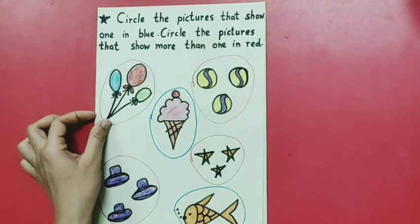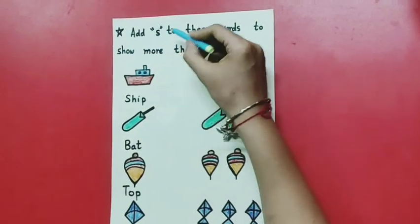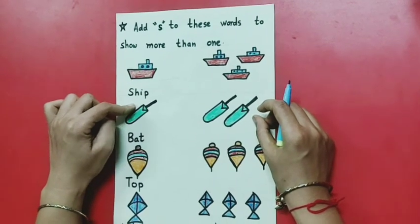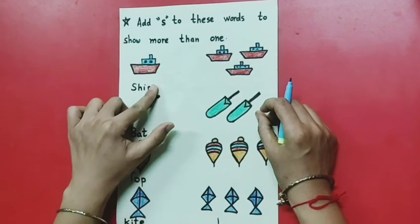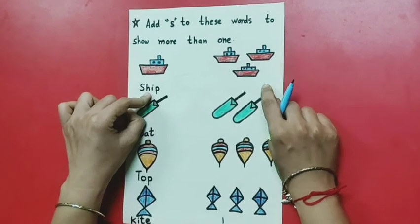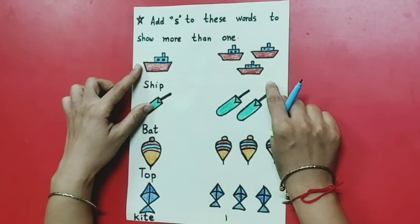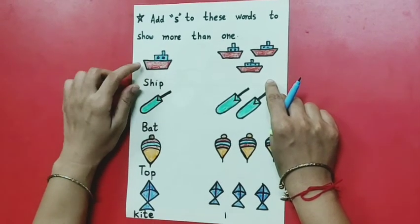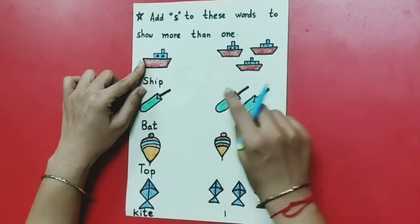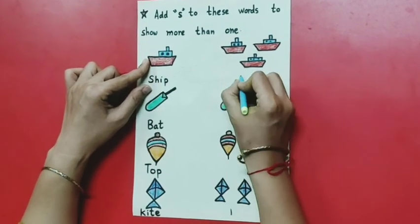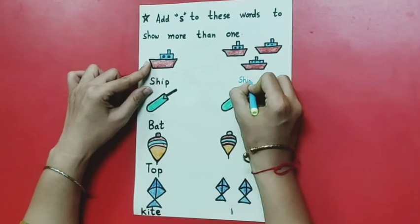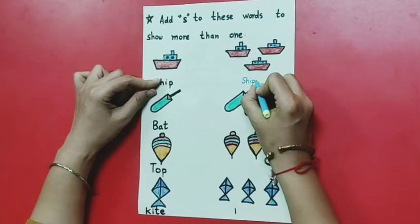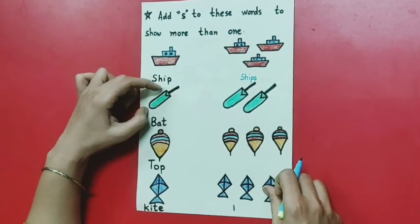So now we have completed this activity. Moving to our next activity — add 'S' to these words to show more than one. Ma'am has drawn pictures and written spellings. We have to add 'S' at the end of the spelling so it becomes many — from singular to plural. Now look here — this is a picture of a ship. We will add 'S' in this spelling. S-H-I-P, ship, but here 1, 2, 3 — three means many ships are here, so we add 'S'.